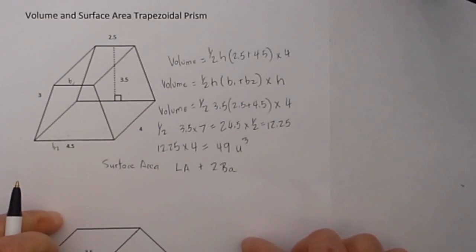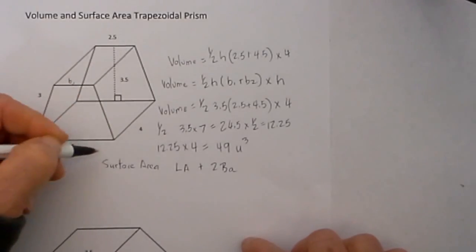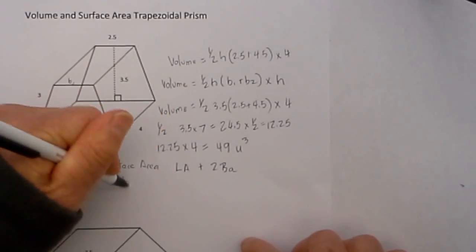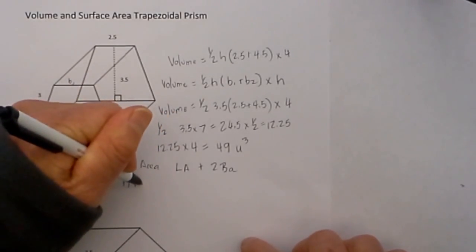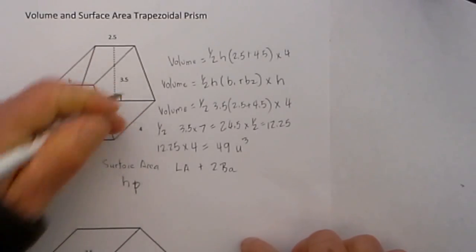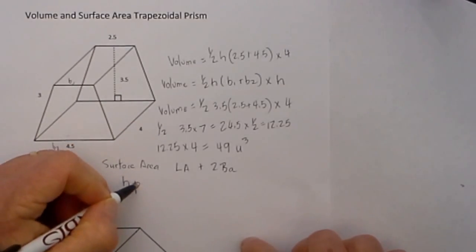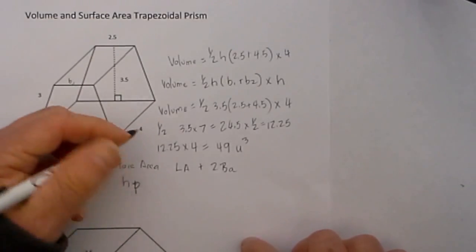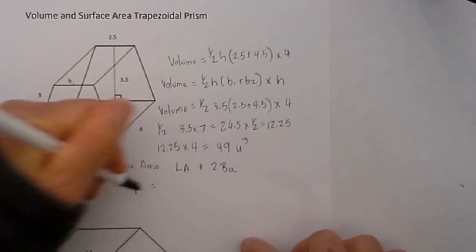And for the lateral area, you take the height of the prism times the perimeter. The height times the perimeter will give us the lateral area. So let's go ahead and do that.